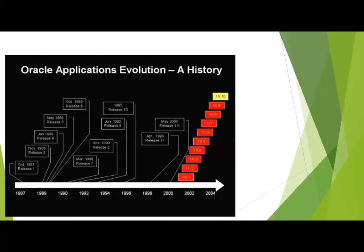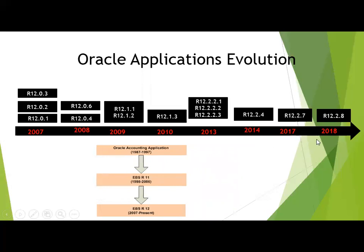Oracle ERP started in 1987, so it's around 31 years old in the market. Oracle releases different versions every year or every six months depending on their strategy. The current version released in September 2018 is 12.2.8. Oracle has now clearly stated they will continue to develop E-Business Suite. It remains an on-premise application, though you can lift and shift it to IaaS platforms.